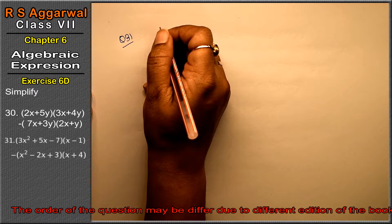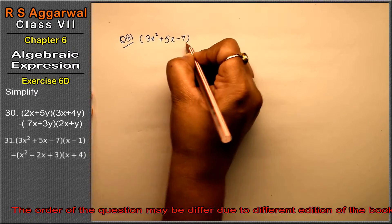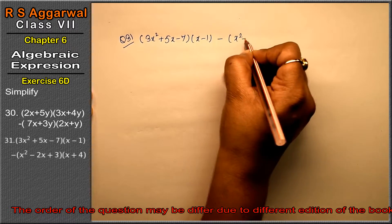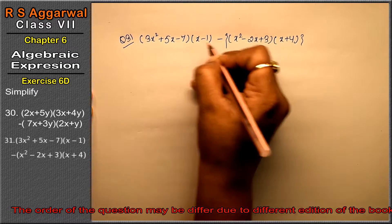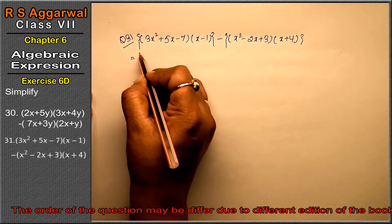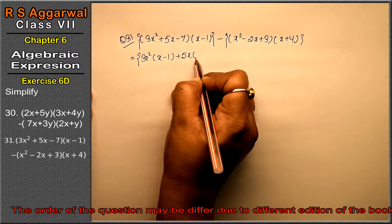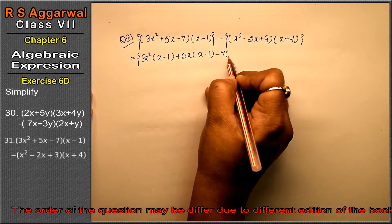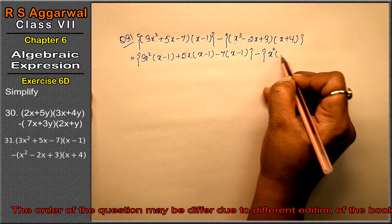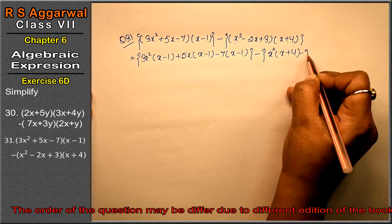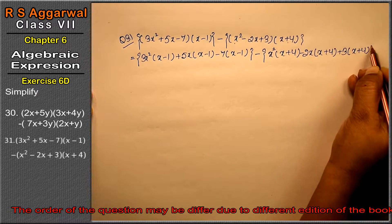Question number 31 is: simplify (3x square + 5x - 7)(x - 1) minus (x square - 2x + 3)(x + 4). We will use middle brackets. Don't be confused by three terms — follow exactly the same pattern. Multiply each term: 3x square, then 5x, then minus 7 into (x minus 1), minus x square into (x plus 4), plus 3 into (x plus 4). Middle bracket done.